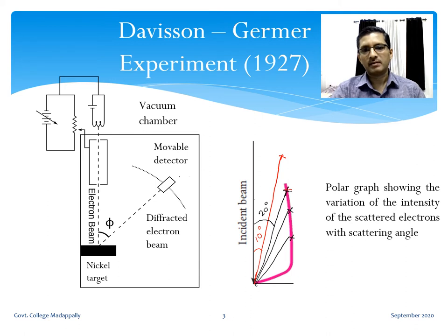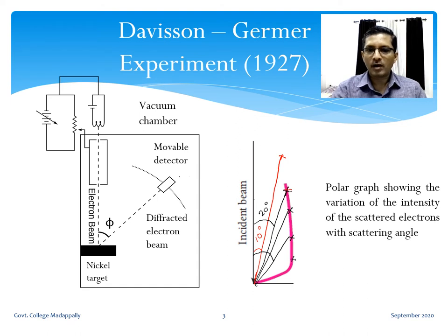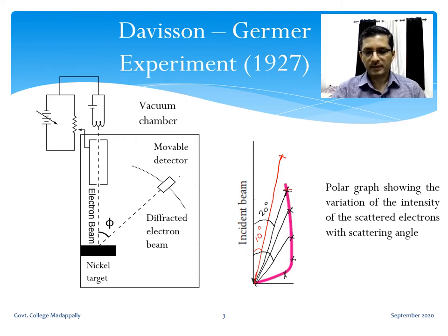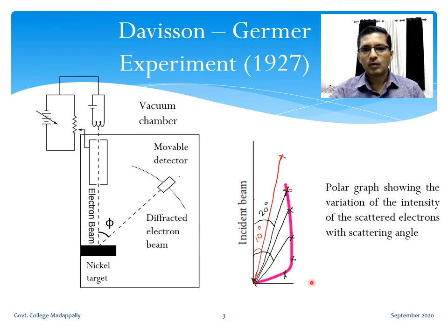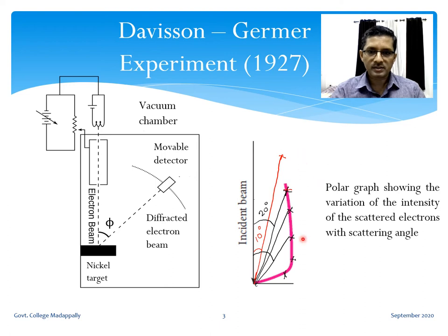The result they got was that the intensity of the scattered electrons decreases monotonously or continuously with the scattering angle. This is the typical graph obtained at 40 volts. Then they changed the accelerating voltage between the cathode and the anode and got different polar graphs for different accelerating voltages.